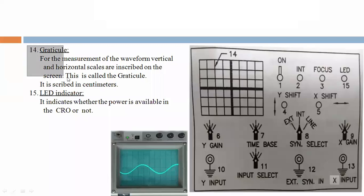Fourteen, Graticule. For the measurement of the waveform, vertical and horizontal scale are inscribed on the screen and this is called the Graticule. Here see in figure, this fourteen number point, that's called the Graticule. Here we are seeing in this figure also, the Graticule is shown.